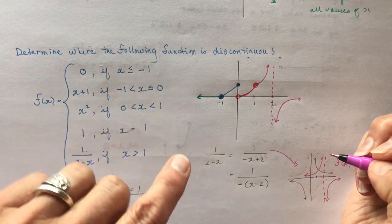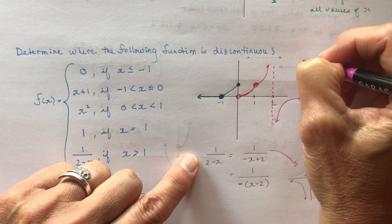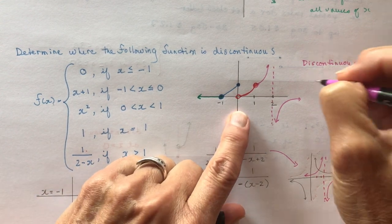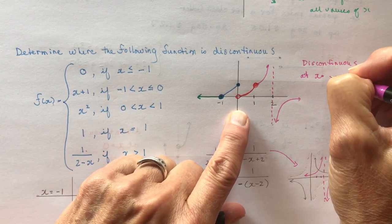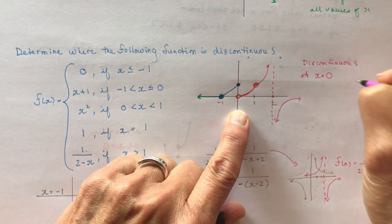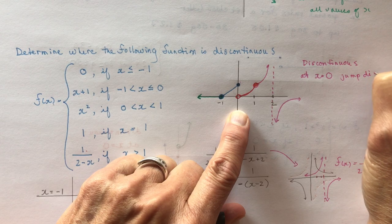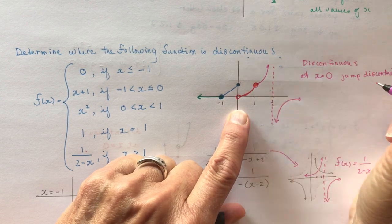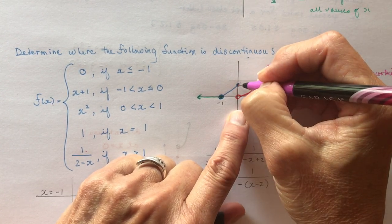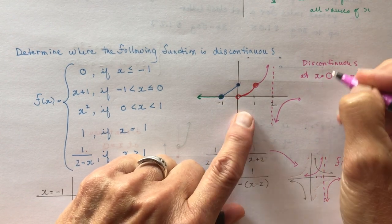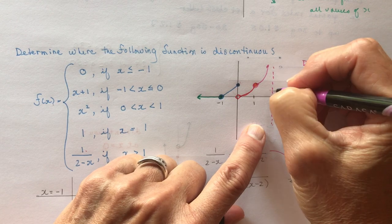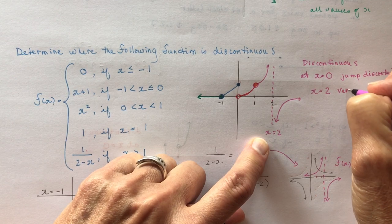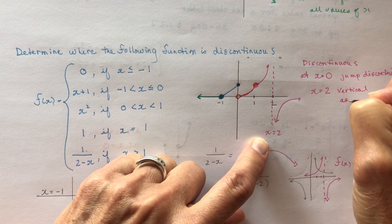So where is the function discontinuous? Looking at the graph: it's discontinuous at x = 0 — that's called a jump discontinuity, because the graph jumps from one height to another. It's also discontinuous at x = 2 because there's a vertical asymptote there, which breaks continuity.